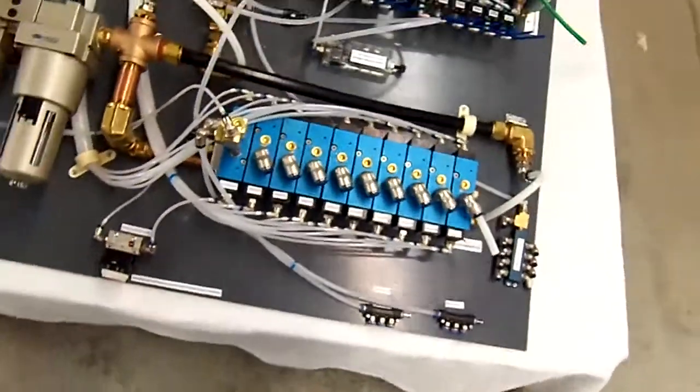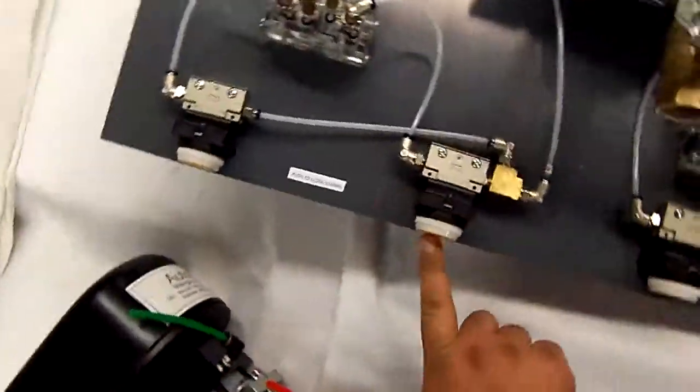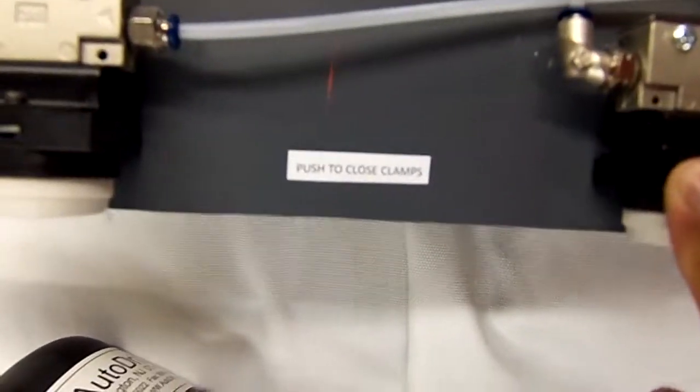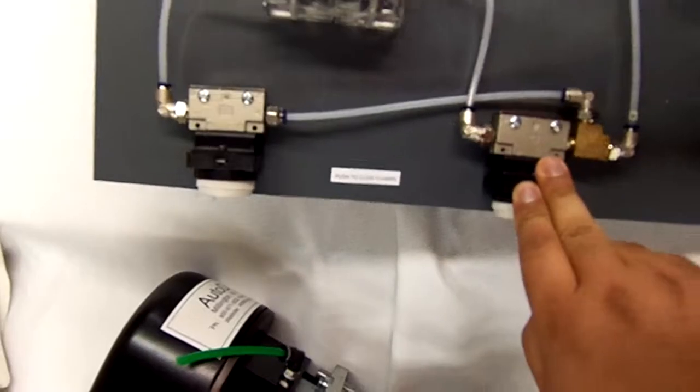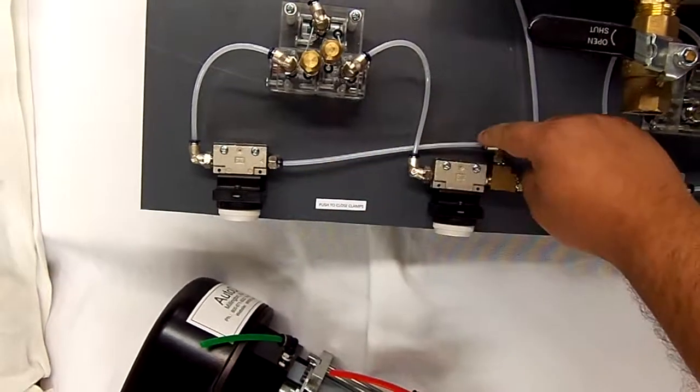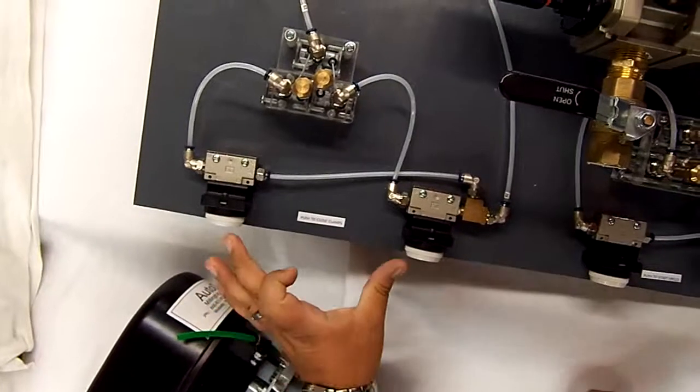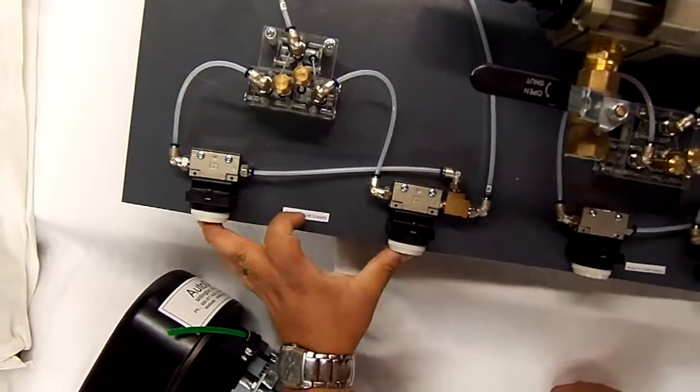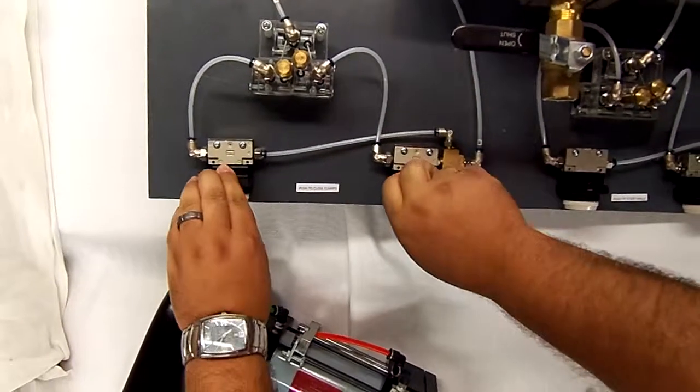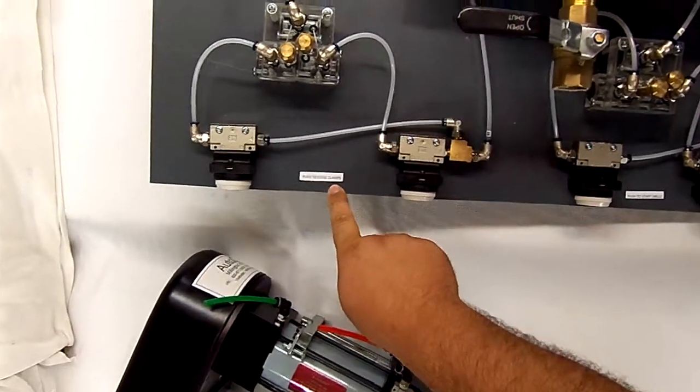Once the clamps are in the open position, the operator will hit these two buttons simultaneously. These buttons need to be removed from this mounting table and moved to a more strategic location. I would definitely recommend that this tube be lengthened so the buttons are farther apart so the operator could not use one hand to hit both buttons at the same time.